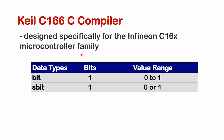Before we move on to arrays, let's take a brief look at the Keil C116C compiler. This compiler is specially designed for the Infineon C16X microcontroller family. The C116C compiler introduced two additional data types: bit, which only requires one bit of storage with a range of 0 to 1, and sbit, which also requires one bit of storage and is either a 0 or a 1.